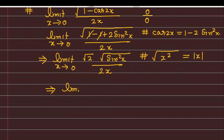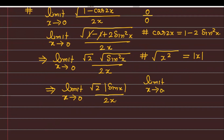तो in the next step we can write: limit x tending to 0, root 2 · mod of sin x, divided by 2 times of x. अब मेरे सामने problem यह है कि मैंने यह तो सीखा है कि limit x tending to 0 of sin x over x equals 1. पर आप देख सकते हैं कि numerator में sin x नहीं है — that is actually mod of sin x. तो मुझे पहले सोचना पड़ेगा कि यह mod हटेगा कैसे।